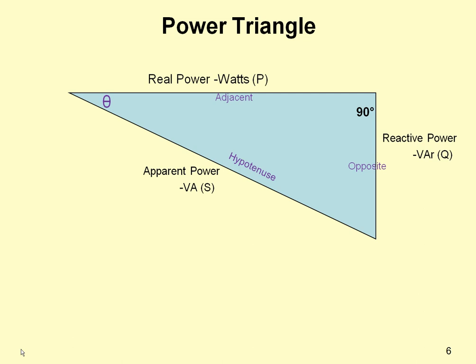So, if we know the angle of theta and the dimensions of any other side, we can find the others. Using trigonometry SOHCAHTOA, we can find the cosine of theta, which is the adjacent over the hypotenuse, becomes power over apparent power, or watts over VA.